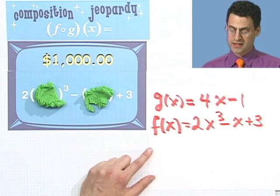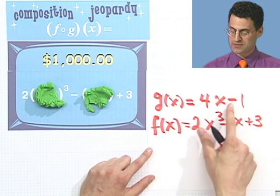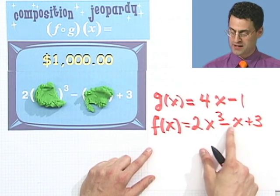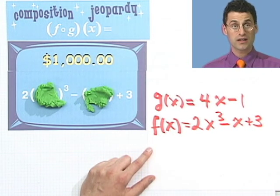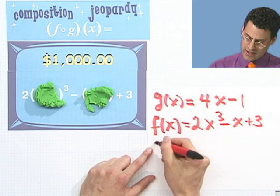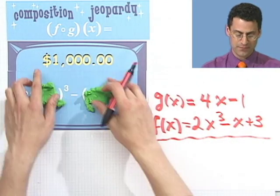And so my answer would be, what is g of x equals 4x minus 1 and f of x equals 2x cubed minus x plus 3? And it turns out that is the correct question. And we can check that in the following way.